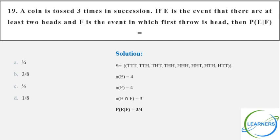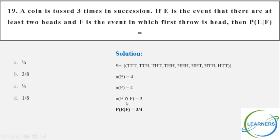E is the event of at least 2 heads: that gives HHT, HTH, THH and HHH — so 4 outcomes. F is the event the first throw is head, which also gives 4 outcomes. E∩F requires at least 2 heads AND first toss is H, giving 3 outcomes: HHH, HHT, HTH. So P(E|F) = N(E∩F)/N(F) = 3/4. Option A.